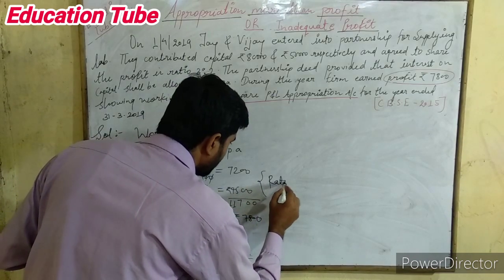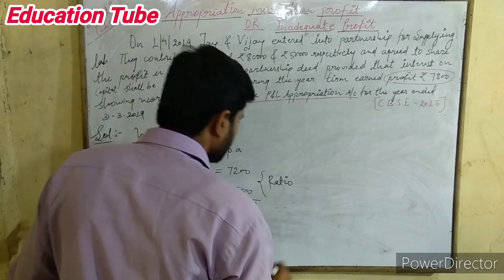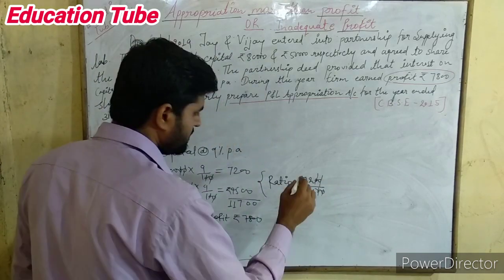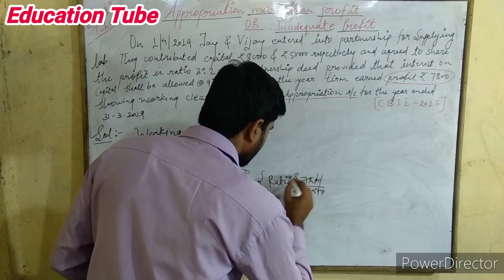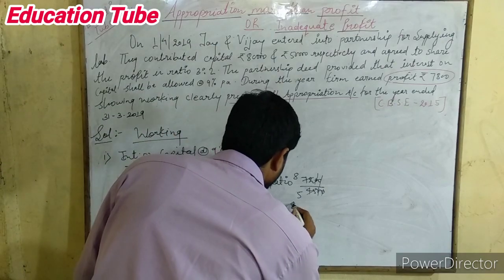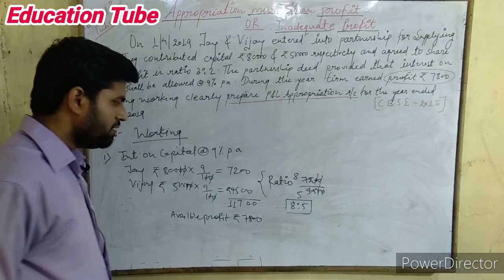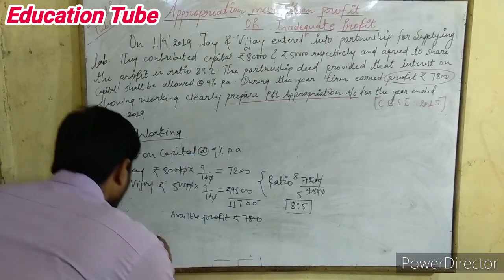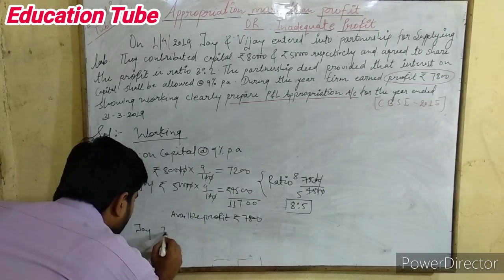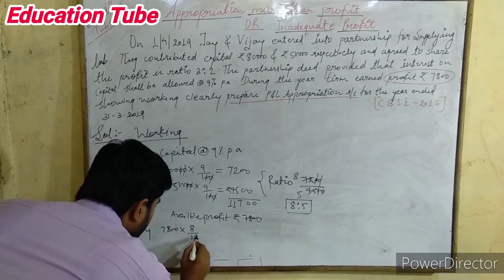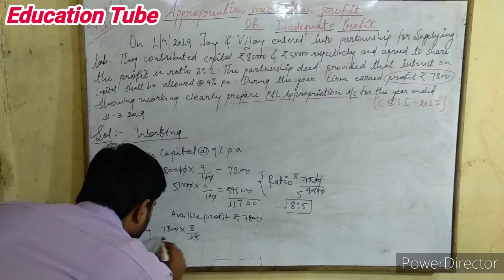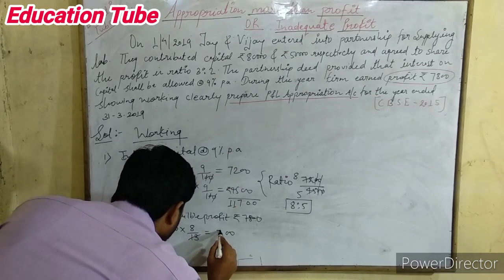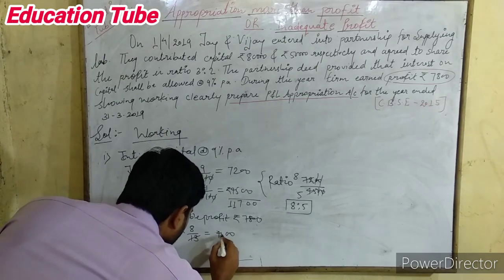We must calculate the ratio. So, 7,200 : 4,500 — cancel the zeros — gives us 72:45, which simplifies to 8:5. Because we have less profit, whatever ratio comes out, we distribute the available profit in that ratio.